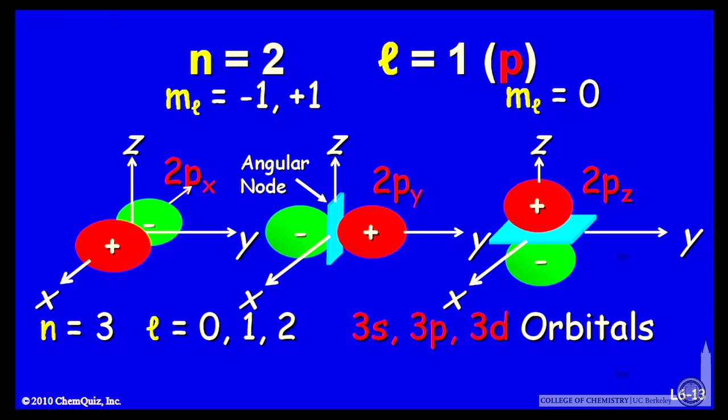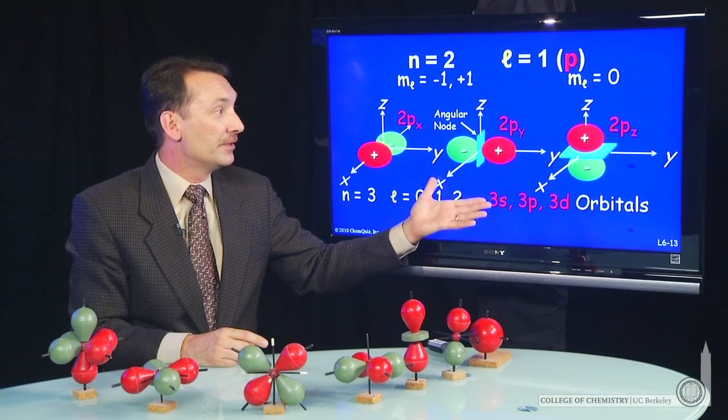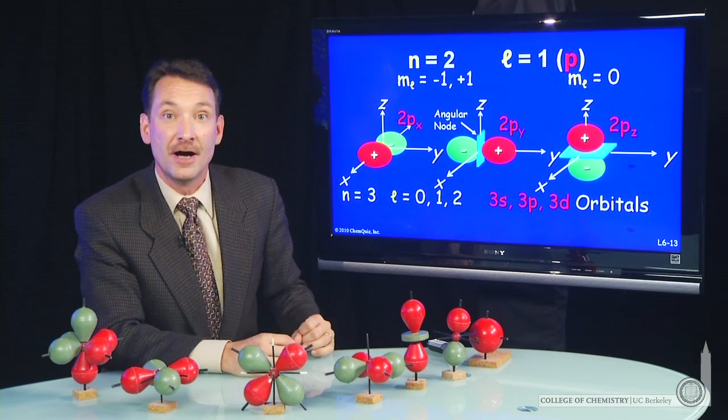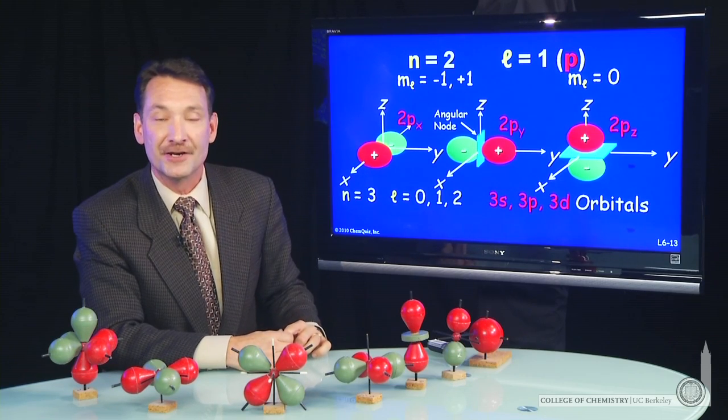So now we understand s, p, and d orbitals. And we understand everything we need to know to have quite a good understanding of atomic orbitals in the hydrogen atom.